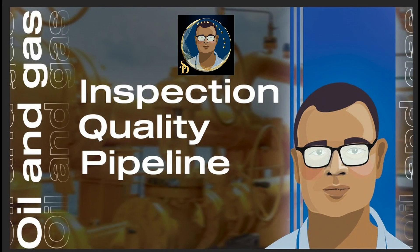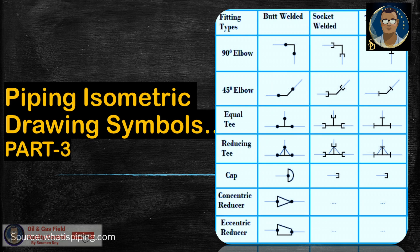Hello, how are you? Hope you are doing well. This is Showman from Oil and Gas Field Quality Control. Today I am in the last part of the piping isometric drawing series, where I will be discussing and showing you some drawing symbols — how piping and components are represented in the drawing.